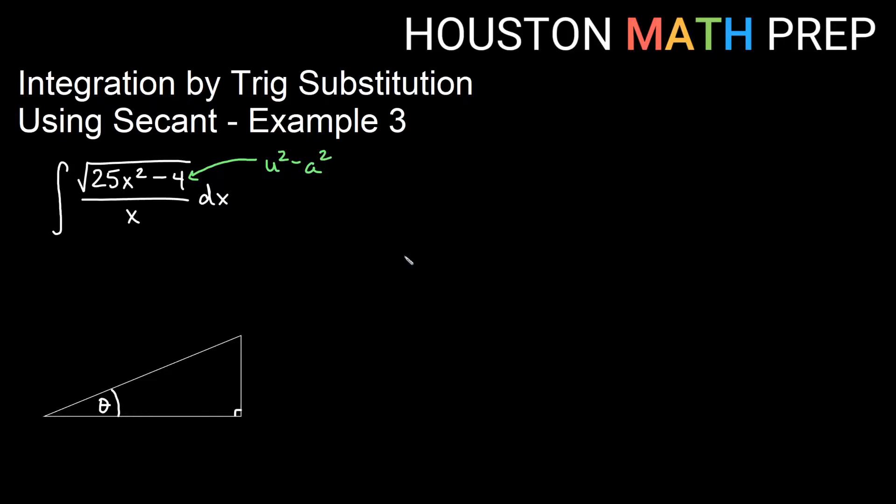See a u squared minus a squared, and know if we're doing trig substitution then that's going to be a secant substitution and we will use u equals a times secant theta when we have a u squared minus a squared form. In this example our u is going to be 5x because 5x times 5x is the first term and our a is going to be 2, 2 squared is 4 there.